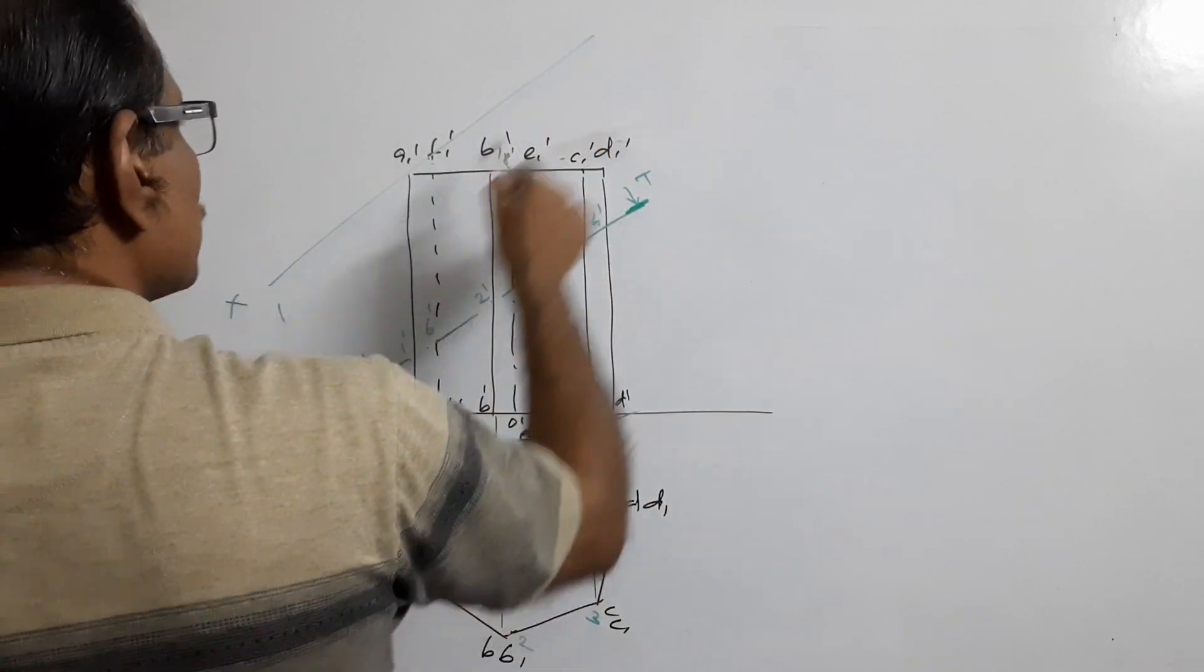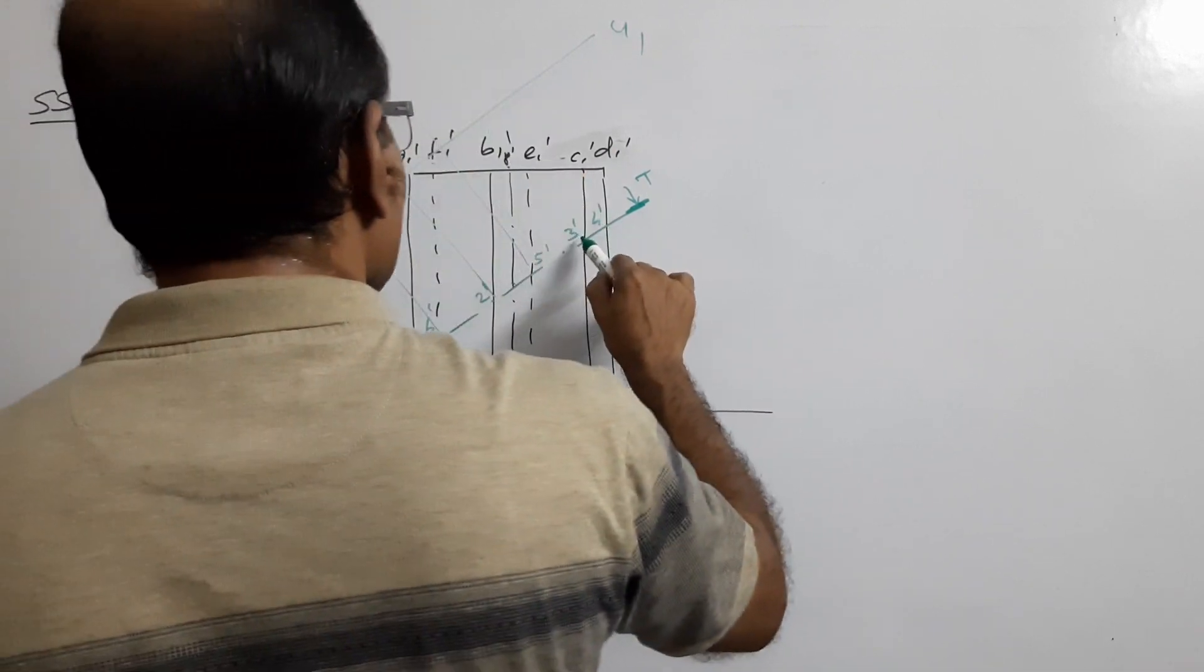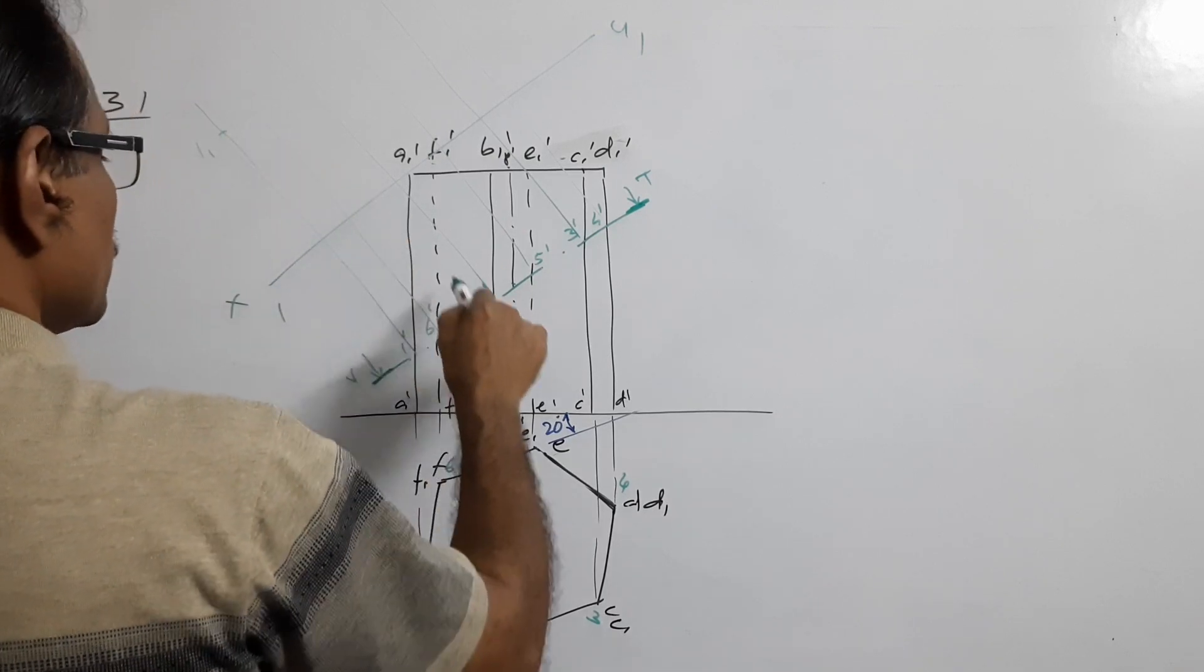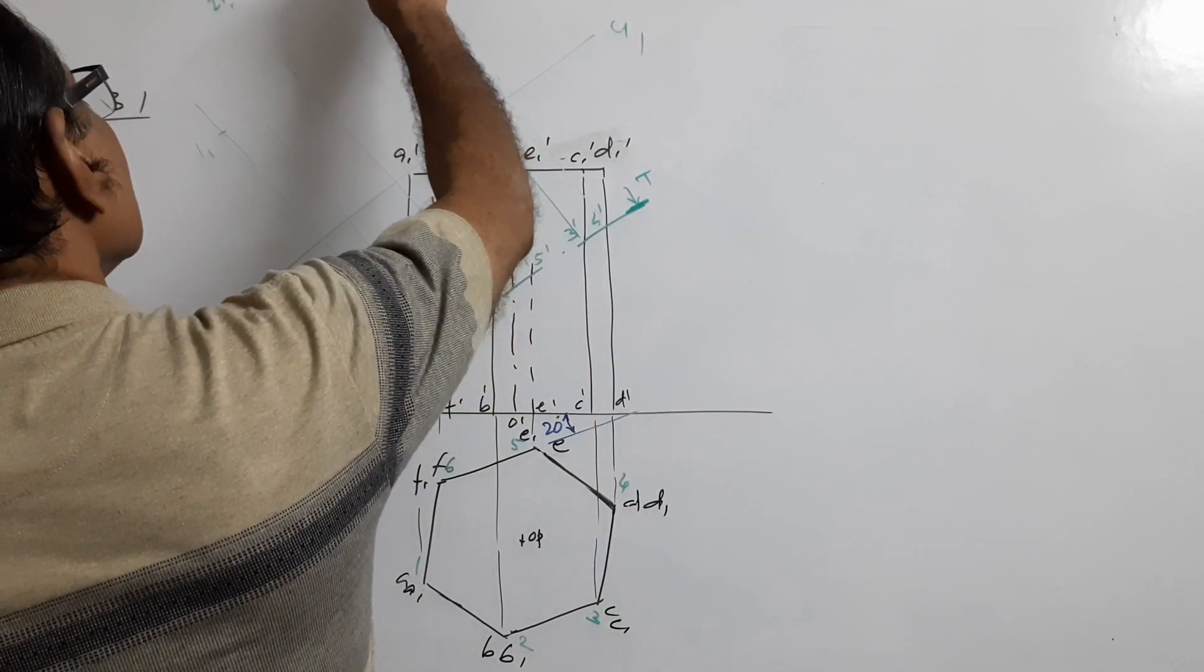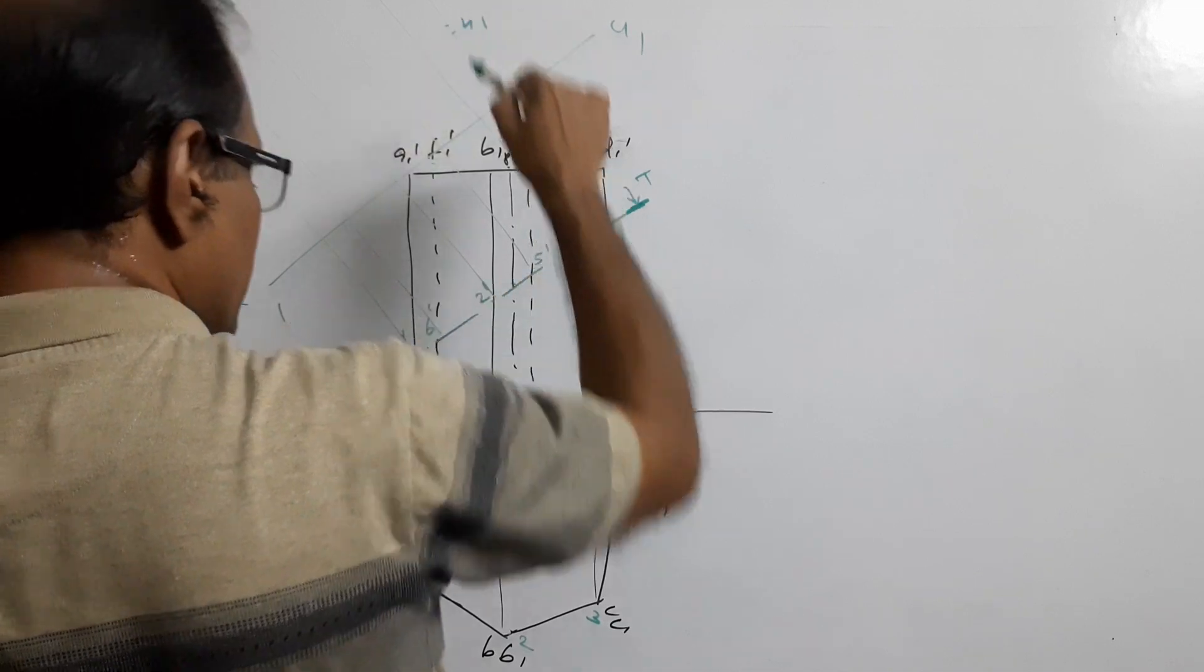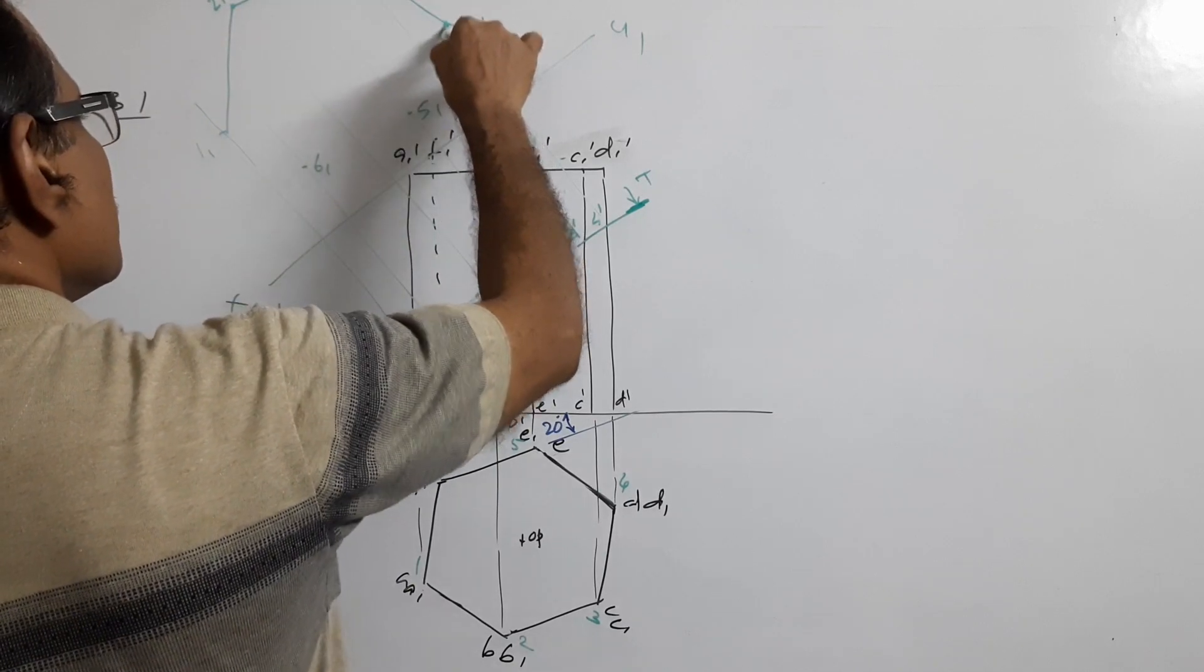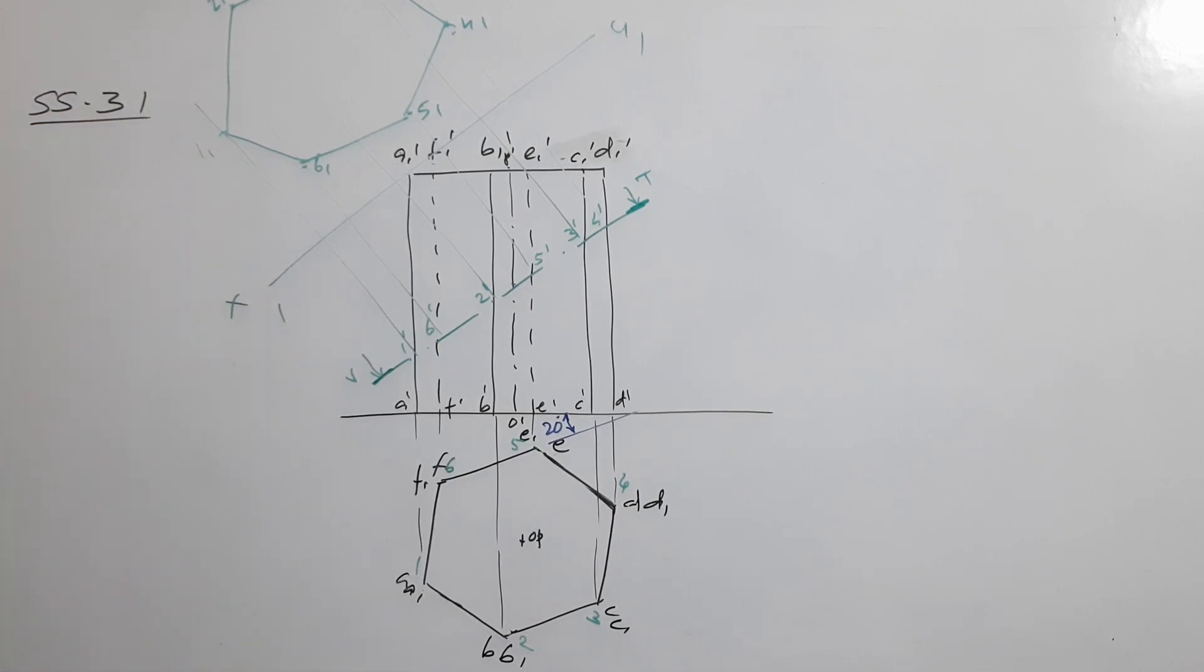Draw the true shape. You know the procedure of drawing true shape. Draw X1Y1 line. Use light projectors. Point 1 is this much below, point 2 is this much below, point 3 is this much below, and so on through point 6. Connect them to get an irregular hexagon, the true shape.